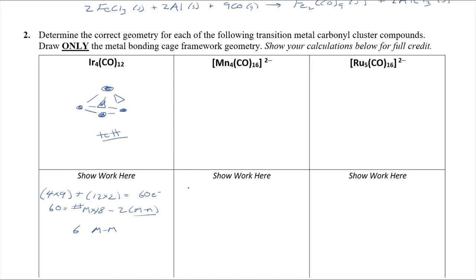This next one's done in exactly the same manner. Here we've got four manganese, and manganese is actually in column seven. So we go four metals times seven valence. Plus, in this case, we've got 16 carbonyls times two. And here's the kicker. You've got to be careful. There's a negative two charge on that whole thing. So we need to consider those two, add those together. And in this case, I get 62 electrons. We can do the same formula here. 62 equals number of metals, in this case still four times 18 minus two times the number of metal-metal bonds. And when you solve this, I end up getting five metal-metal bonds.